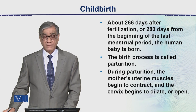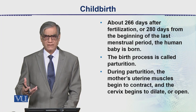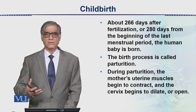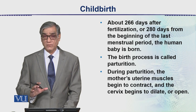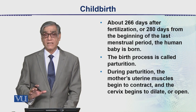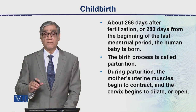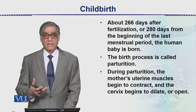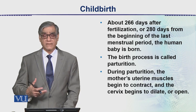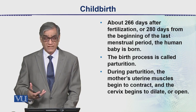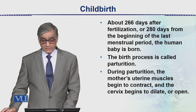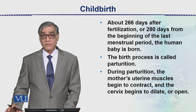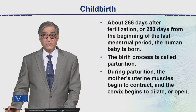The stopping of menstruation is an indication that pregnancy may have occurred. The birth process is also called parturition.